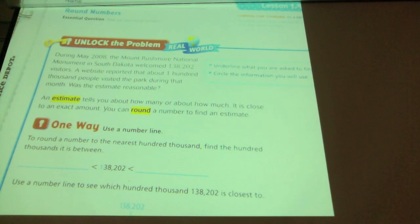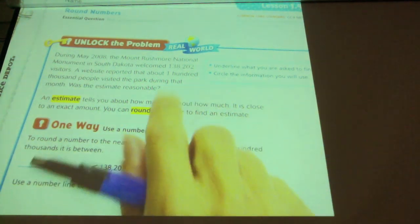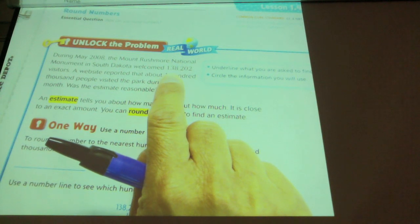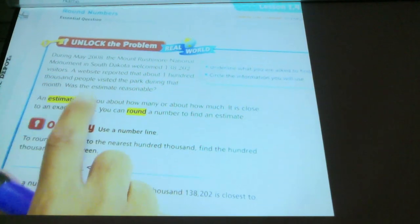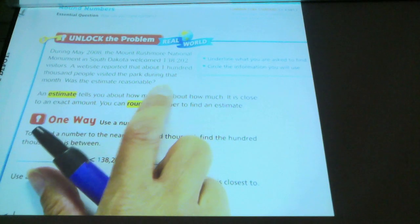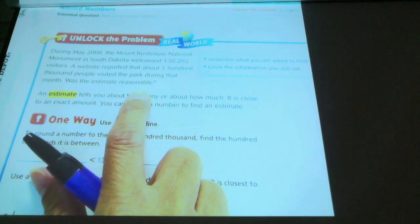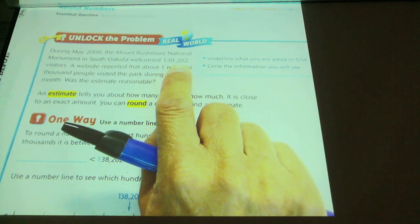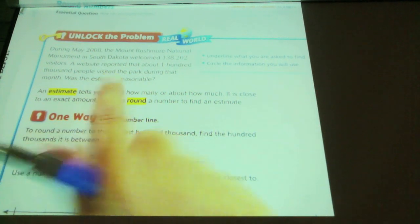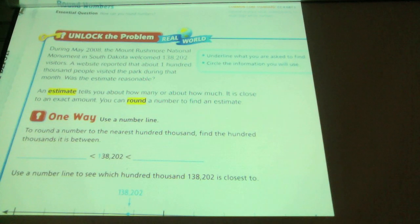During May 2008, the Mount Rushmore National Monument in South Dakota welcomed, read this one with me. One hundred thirty-eight thousand two hundred and two visitors. A website reported that about 100,000 people visited the park during that month. Was the estimate reasonable? So this is how many actually visited. And a website on the internet had said there was about 100,000 visitors. So they want to know if 100,000 visitors sounds fair. Like, is that a close estimate of how many people were there?